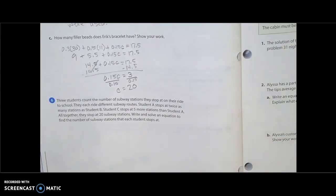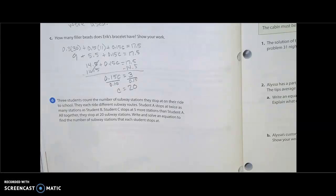Last example question. Three students count the number of subway stations they stop at on their ride to school. They each ride different subway routes. Student A stops at twice as many stations as student B. Student C stops at five more stations than student A. All together they stop at 20 stations. Write and solve an equation to find the number of subway stations that each student stops at.